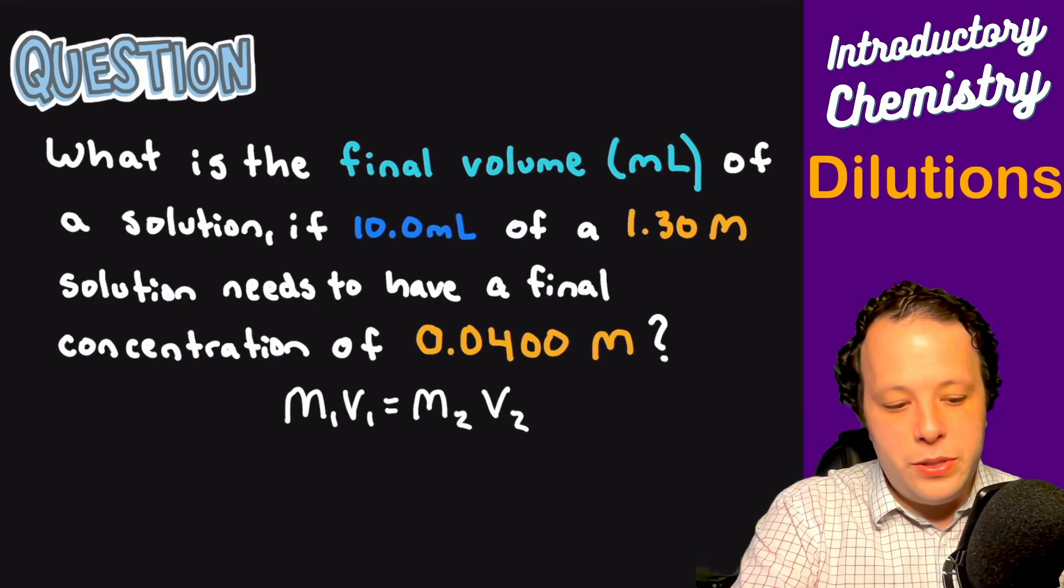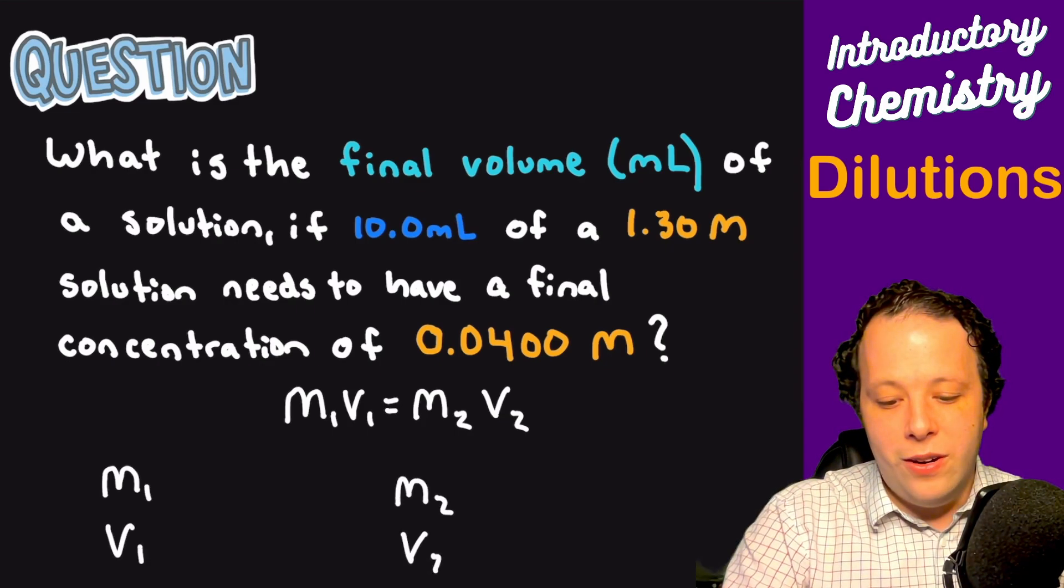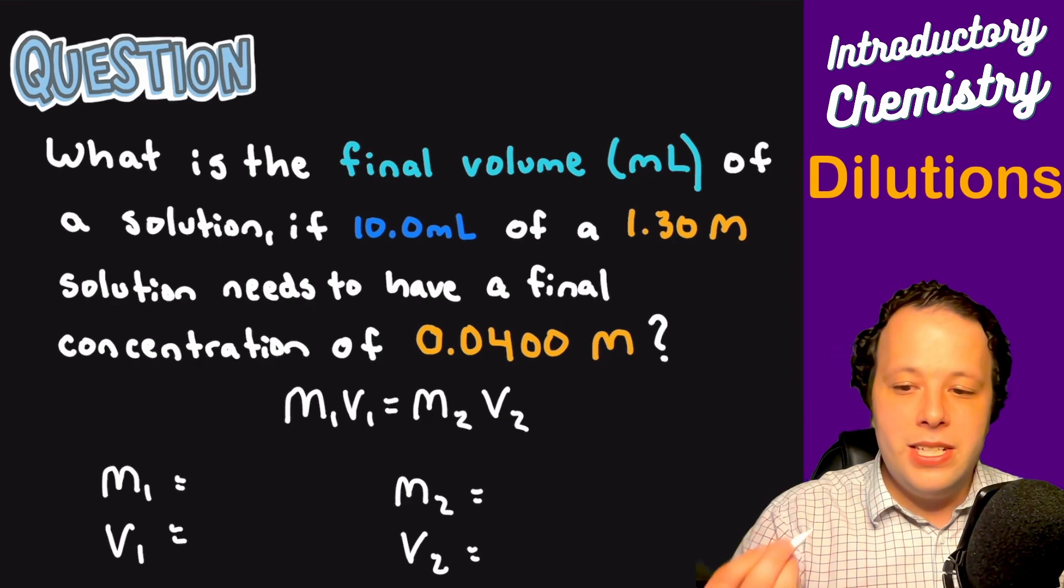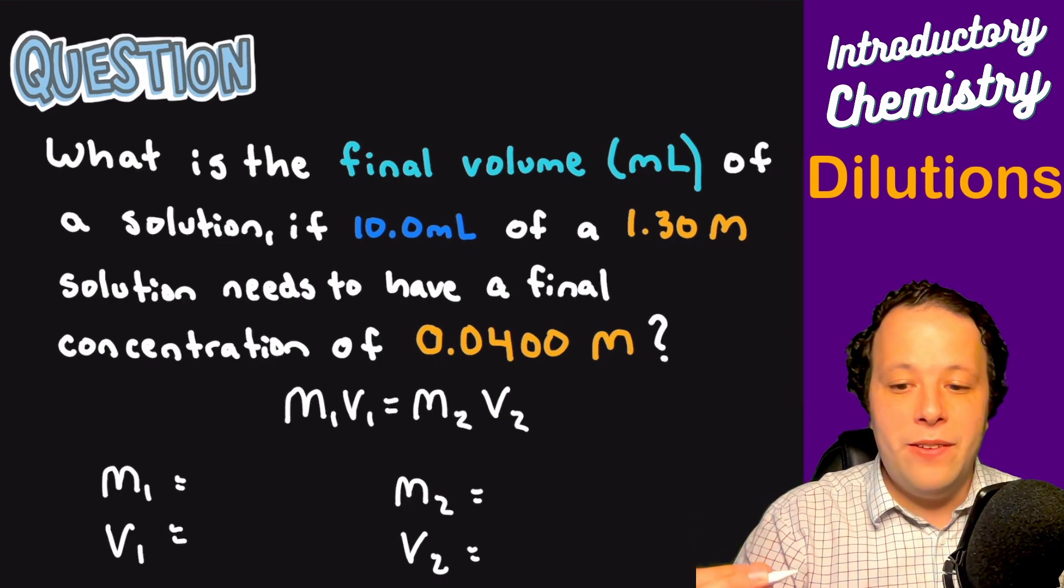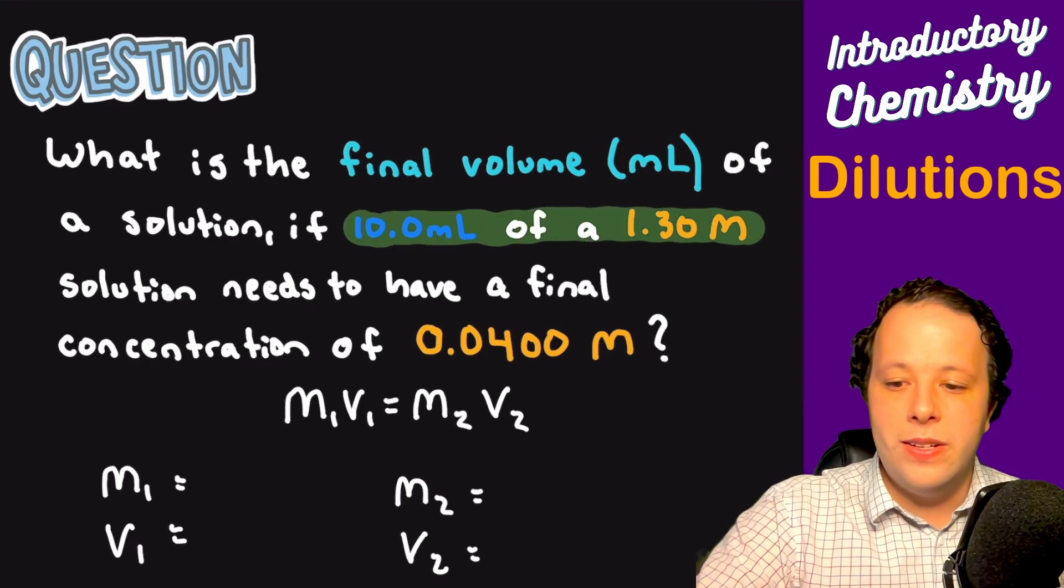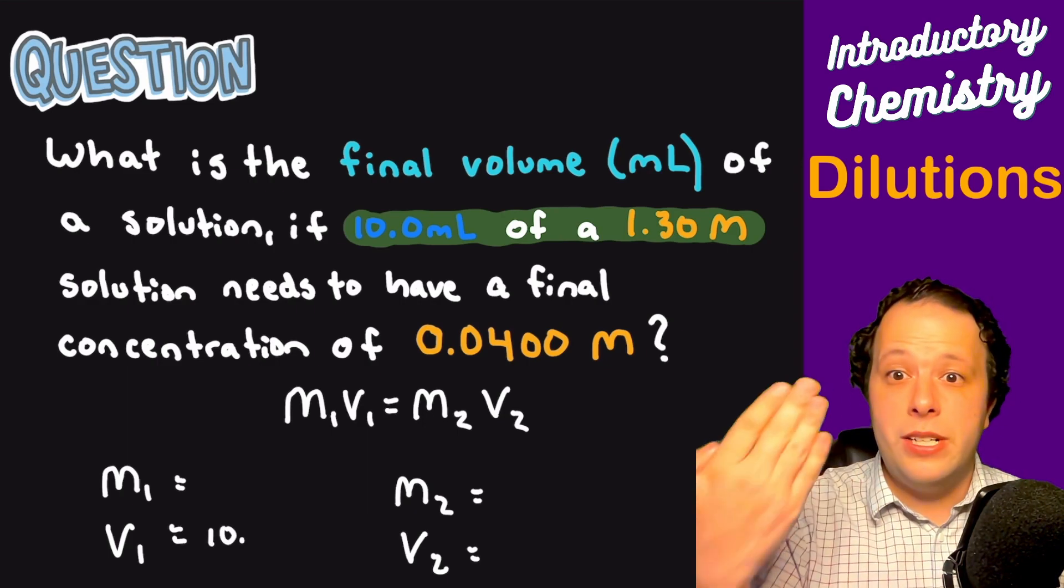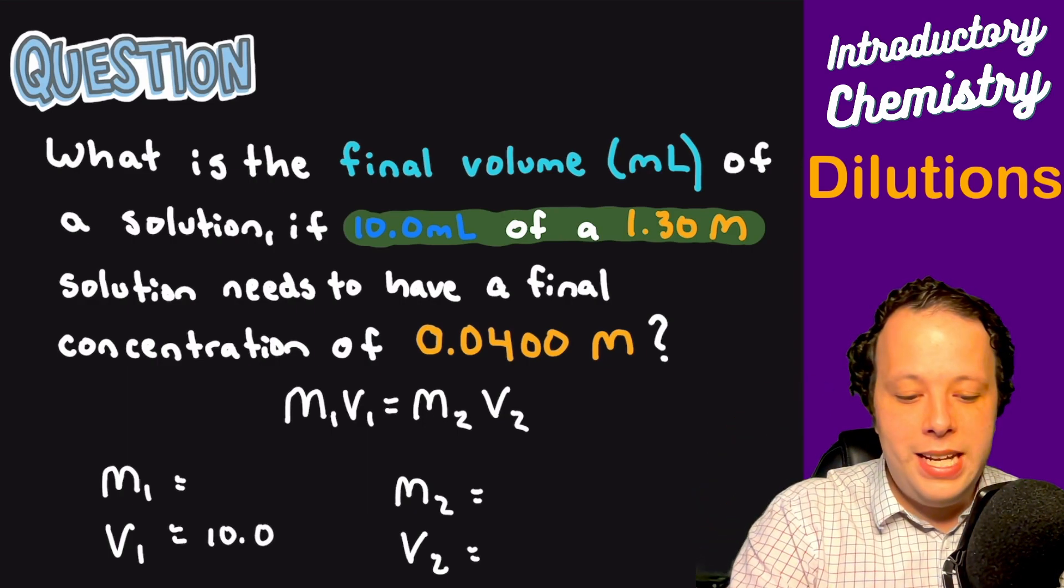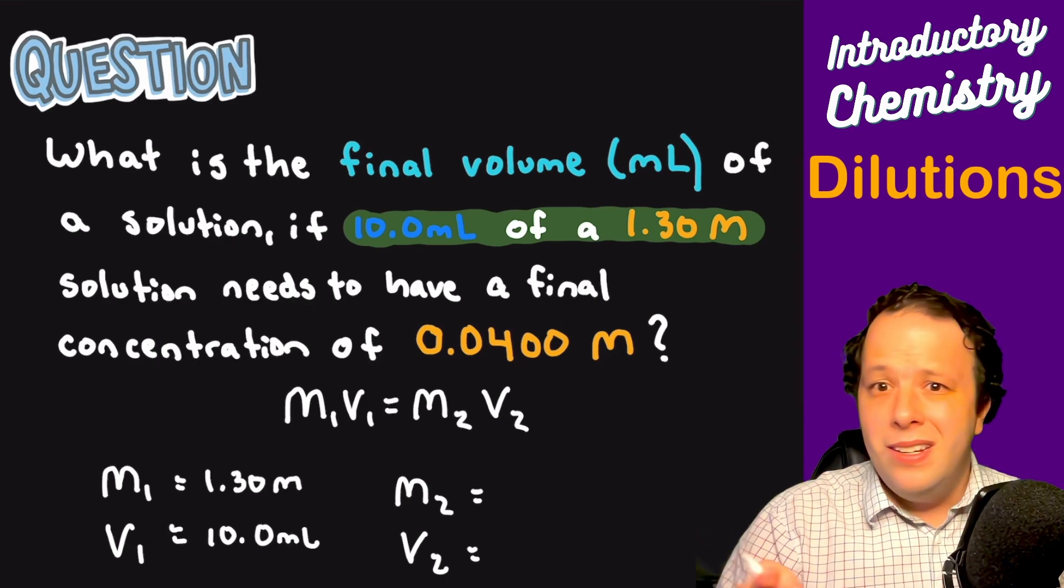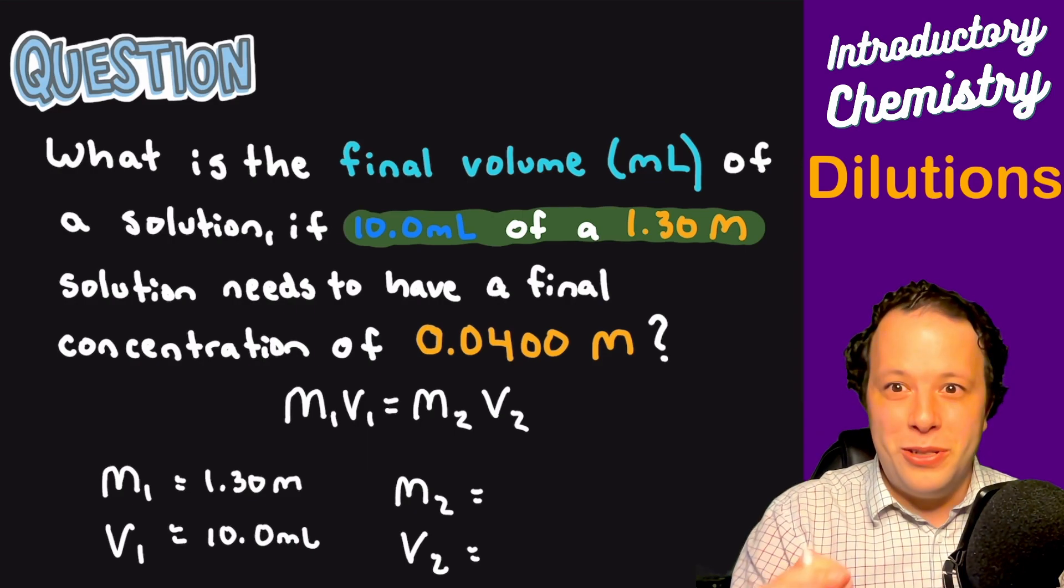When it's talking about making a new solution with the same chemicals, it's talking about diluting it. So we're going to write out M1, V1, M2, V2 separately and see which pieces we were given. At the very beginning of the problem it says we have 10 milliliters of a 1.30 molar solution. Those two terms are together, meaning they're part of the same solution. We'll label that as solution one. It doesn't matter if they're one or two as long as they go together.